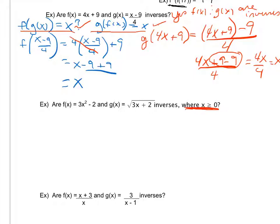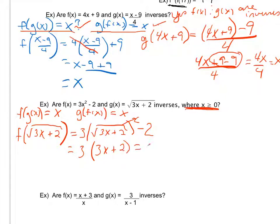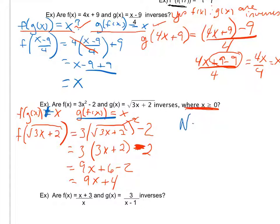Going back to the original question, I'm going to ask: does f of g of x equal just x, as well as does g of f of x equal just x? Taking the first one, I have f of square root of 3x plus 2, which gives me 3 times the square root of 3x plus 2 squared minus 2. My square and my square root cancel, but I have to keep 3x plus 2 grouped together since it was originally under the radical. Distributing my 3, I get 9x plus 6 minus 2, which gives me 9x plus 4. I cannot simplify that any further. Since f of g of x did not equal x, I don't even have to check my second one — I already know the answer is no, they are not inverses.